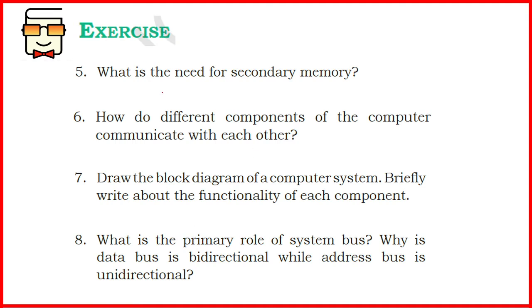Coming to the fifth question: what is the need of secondary memory? Secondary memory, though it is cheaper and slower than primary memory, is required because there is a limited amount of storage in primary memory. If primary memory is RAM, it is volatile in nature; if it is ROM, it is read-only. So there is a problem with both kinds of primary memory. That is why we need a secondary storage mechanism — to have larger storage capacity than primary memory, permanent non-volatile storage, and the ability to both read and write. These are the reasons why we need secondary memory.